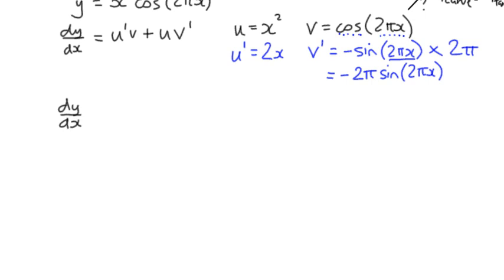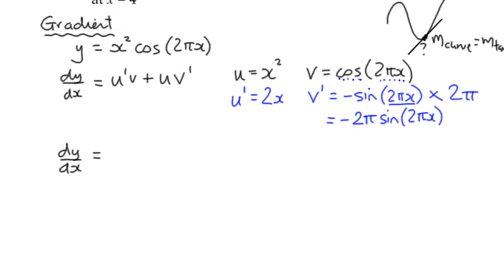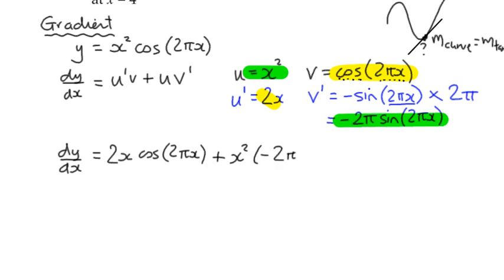We'll go back to the left-hand side. We can see that dy/dx is u dash v. And there's u dash and v. So it's going to be 2x multiplied by the cos of 2πx. We're going to add to that u v dash. So we've got x squared multiplied by this term here, negative 2π sine 2πx.